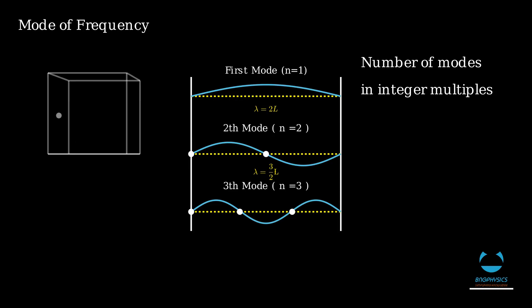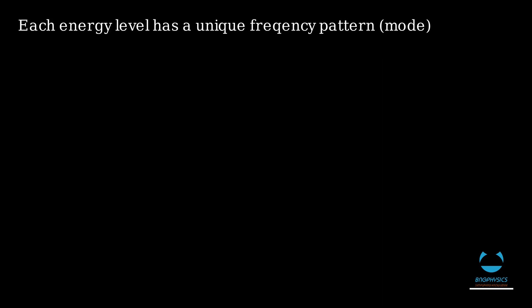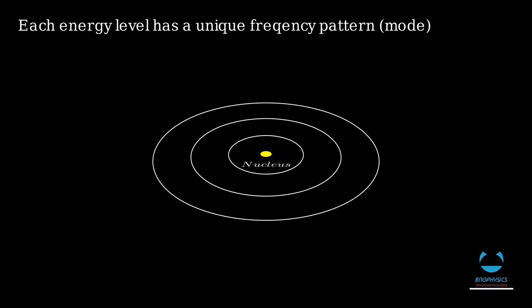By the way, the same concept applies to atoms. In atoms, we have energy levels and each energy level has a unique frequency pattern or mode. Electrons that are close to the nucleus have the least amount of energy. As you go further from the nucleus, electrons at higher energy levels have more energy. So in general, this is the idea of n or the energy level in Max Planck's equation.